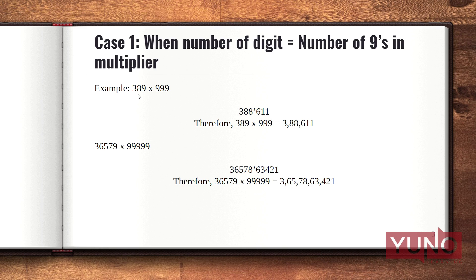So this whole number that you get is your answer. 389 multiplied with 999 is therefore 388,611.